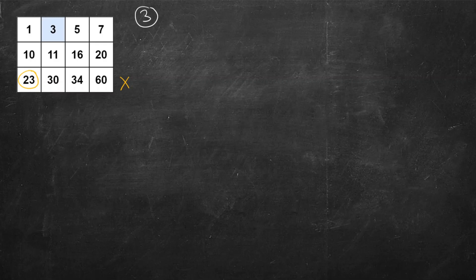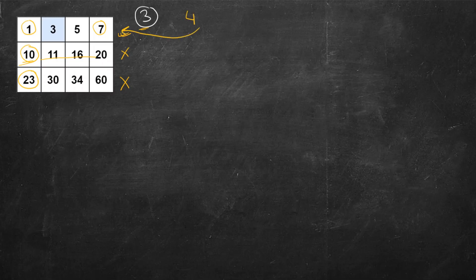Next we come here, we look at the first element — it's 10, which is more than 3, so all numbers will be more than 3, no point looking here. Here we see that 1 is less than 3, so it might contain 3. We check the last element — it's more than 3 — so first element is less, last element is more, and we are sure that if 3 exists at all it should lie in this row. Similarly if we had to search for 4, we'd narrow down to this row since 4 is more than 1 and less than 7.